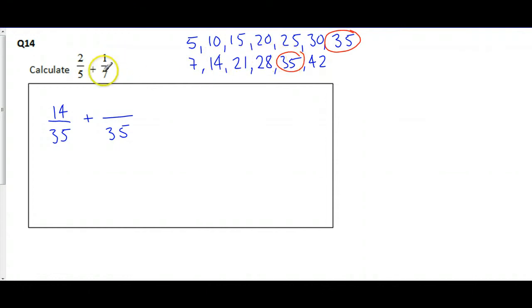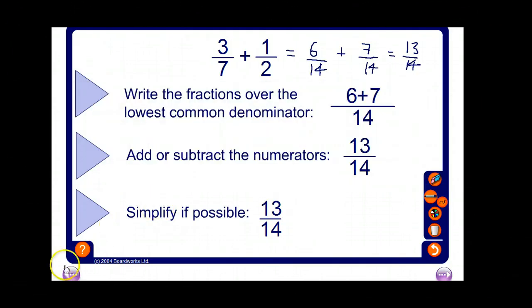And 1, 2, 3, 4, 5 bigger in this fraction, so the numerator's got to get five times bigger, which is 5. That gives us 19 out of 35. Check—you can't simplify. The only number that goes into both of these is one, so our job is done.